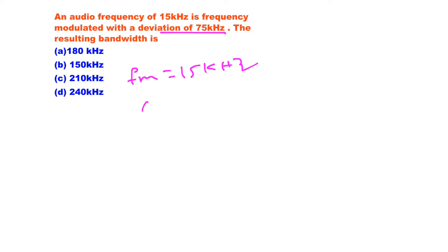So this is the given question. Here message frequency is 15 kHz and frequency deviation, that is delta f, is 75 kHz. But we need the bandwidth. So bandwidth, we know that bandwidth is equal to 2 fm into 1 plus beta for FM signal.